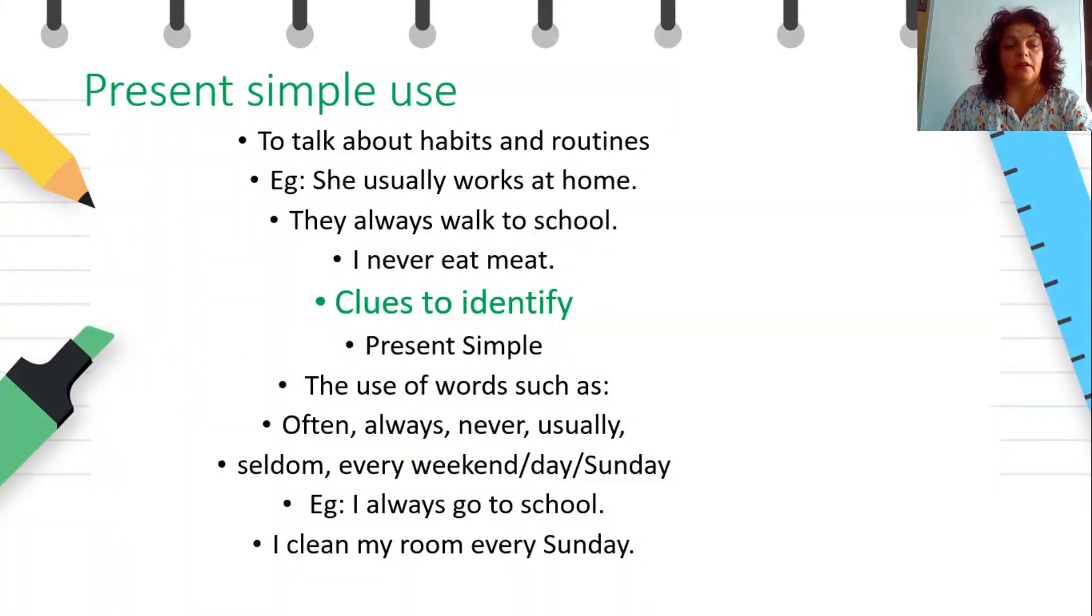Let's see what are the present simple uses: to talk about habits and routines. She usually works at home. They always walk to school. I never eat meat. Clues to identify: How can you identify present simple? Maybe you should pay attention to time expressions like often, always, never, usually, seldom, every weekend, day, Sunday. Example: I always go to school or I clean my room every Sunday. It's obviously a repeated action.